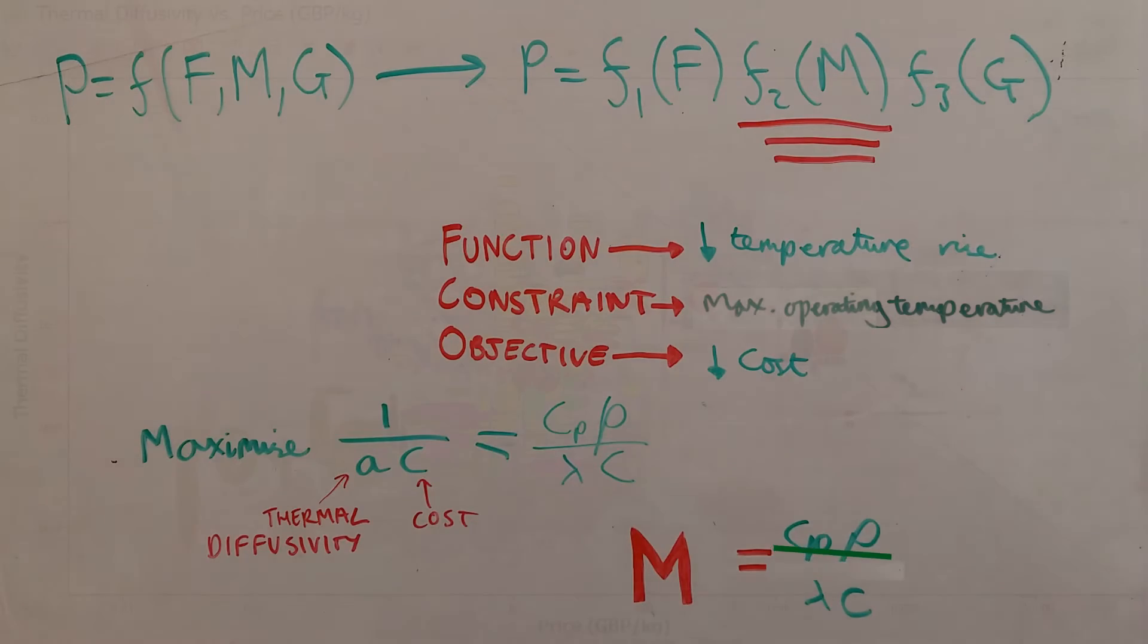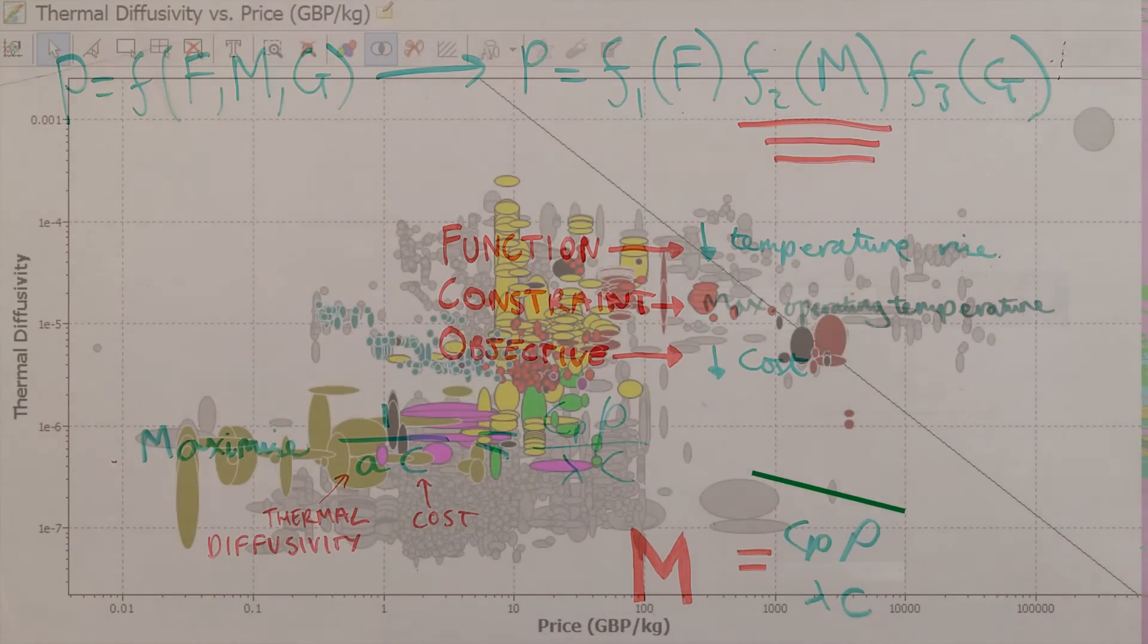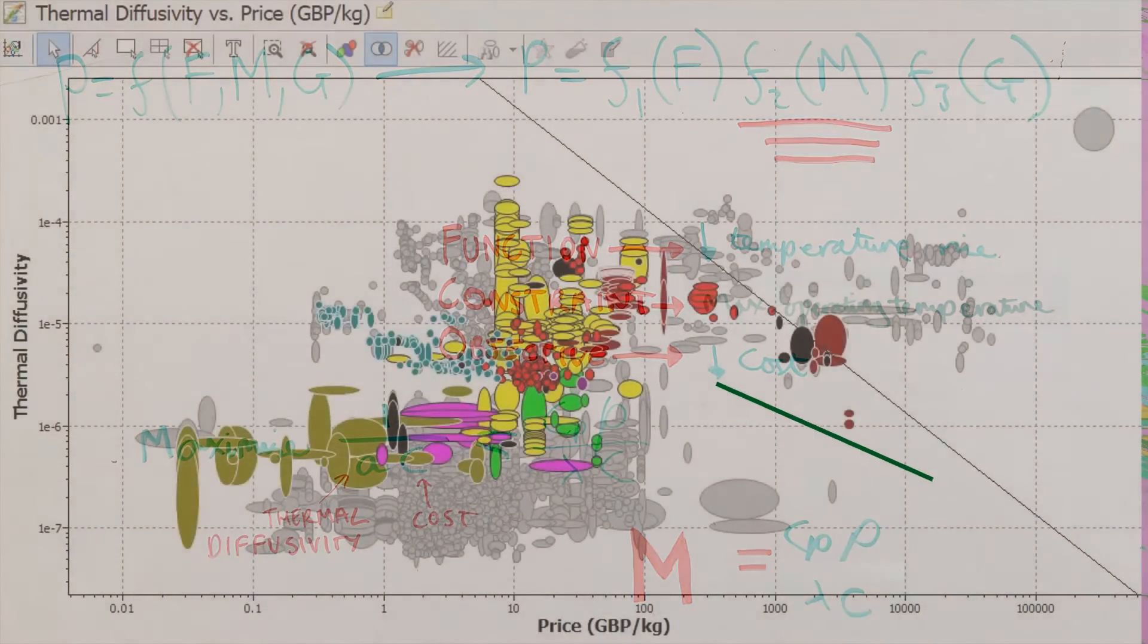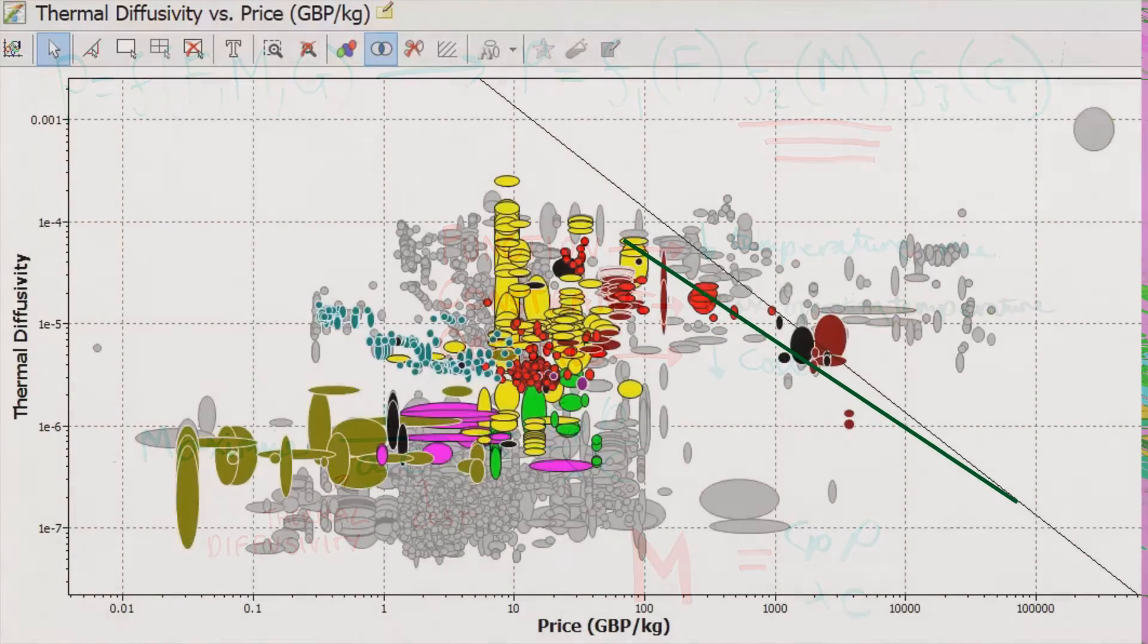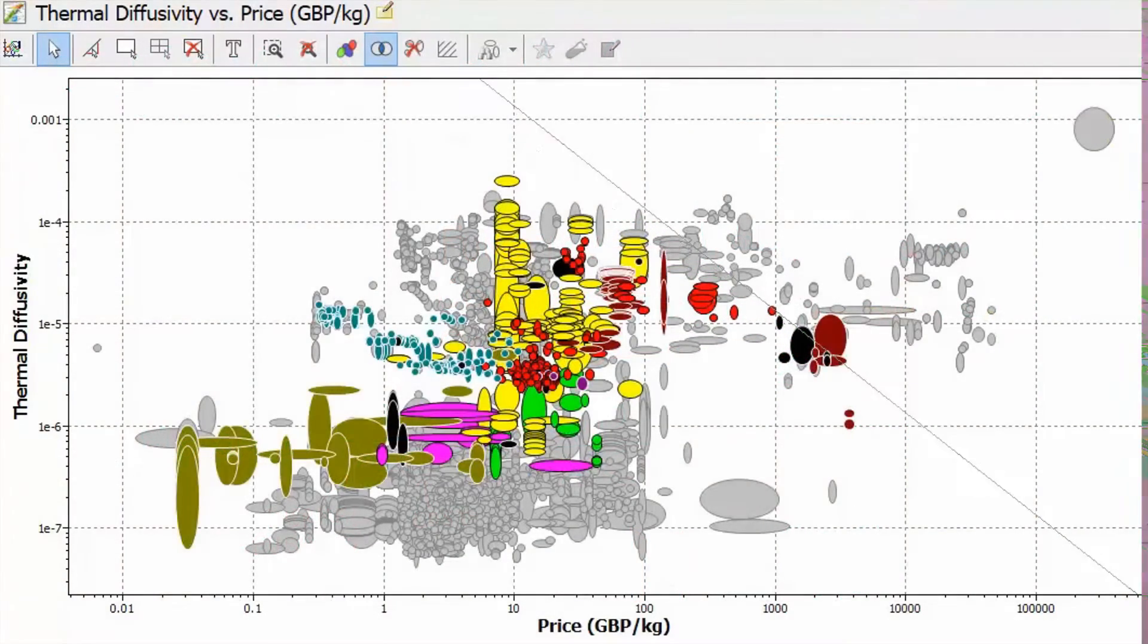This forms the equation for a line. The line has a fixed gradient and can be superimposed on the graph obtained earlier. It can be moved, eliminating more candidate materials until a small selection remains.